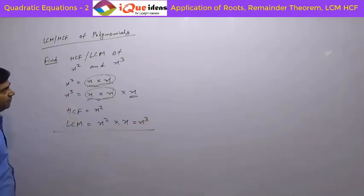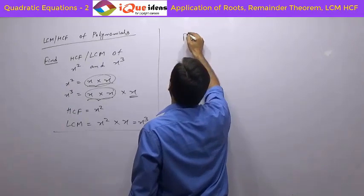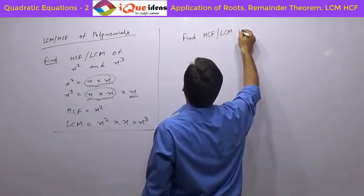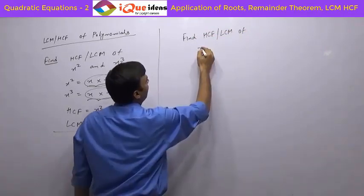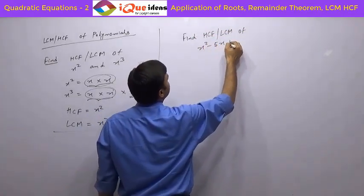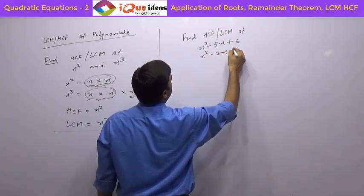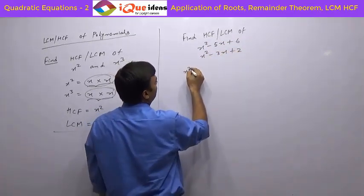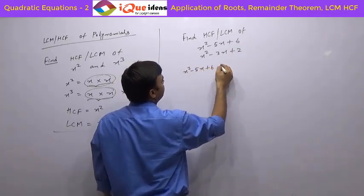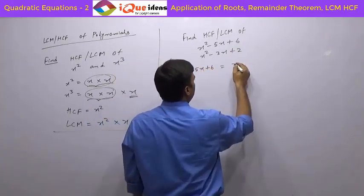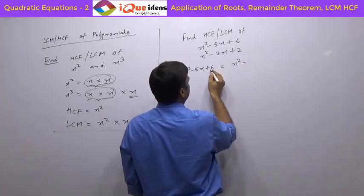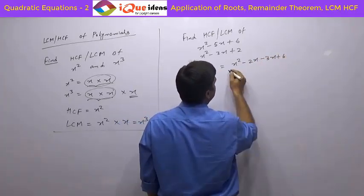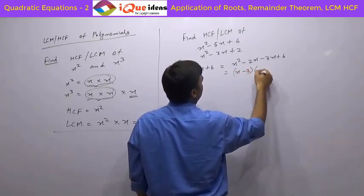This was very simple. Let us take another example — find HCF and LCM of x square minus 5x plus 6 and x square minus 3x plus 2. What we need to do first is factorize. So x square minus 5x plus 6 equals x square minus 2x minus 3x plus 6, which gives us x minus 2 into x minus 3.